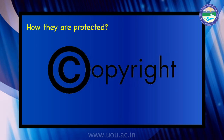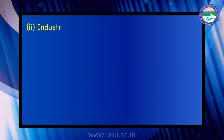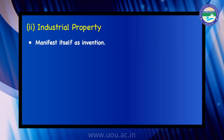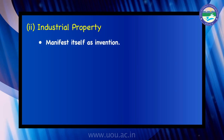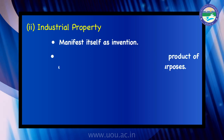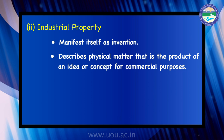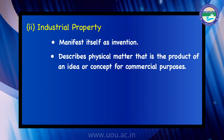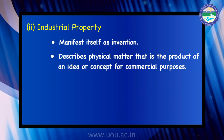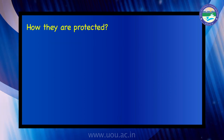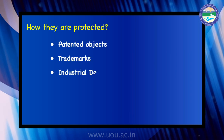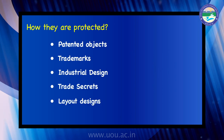Industrial property, on the other hand, manifests itself as invention. Industrial design marks protection against unfair competition. It describes physical matter that is the product of an idea or concept for commercial purposes. Industrial properties are protected by patents, trademarks, industrial designs, trade secrets, and layout designs.